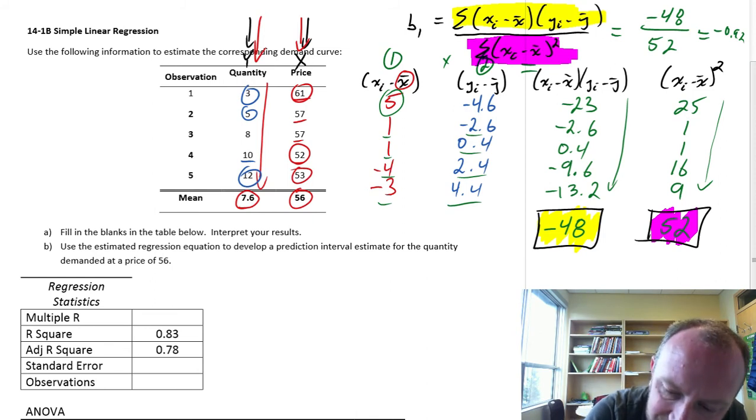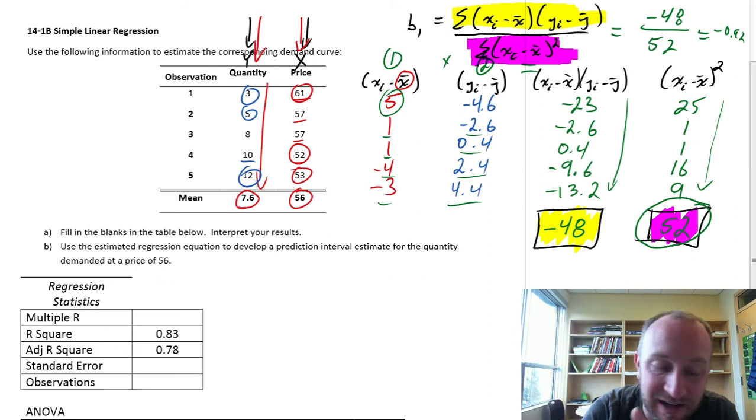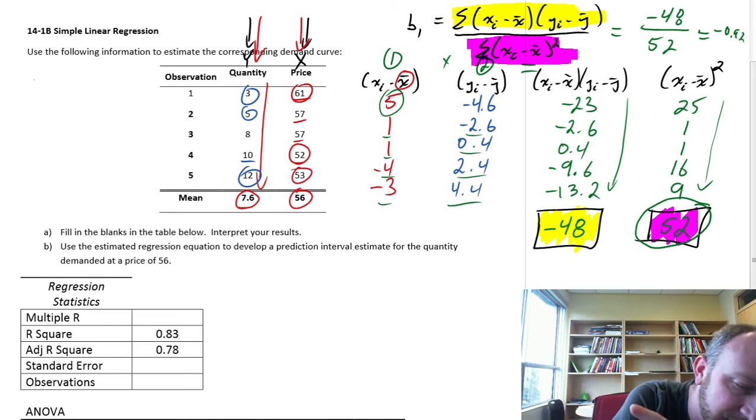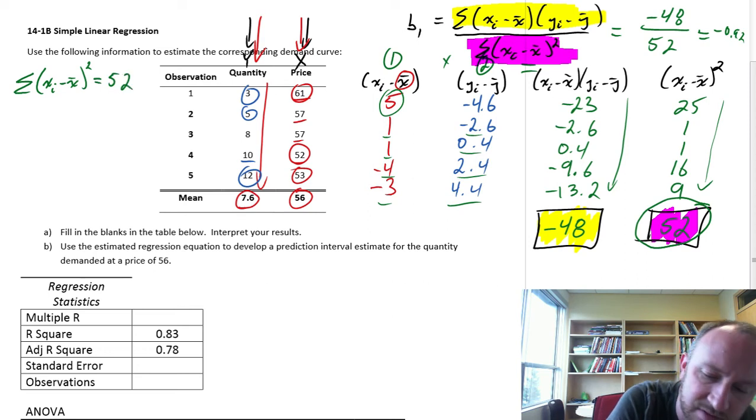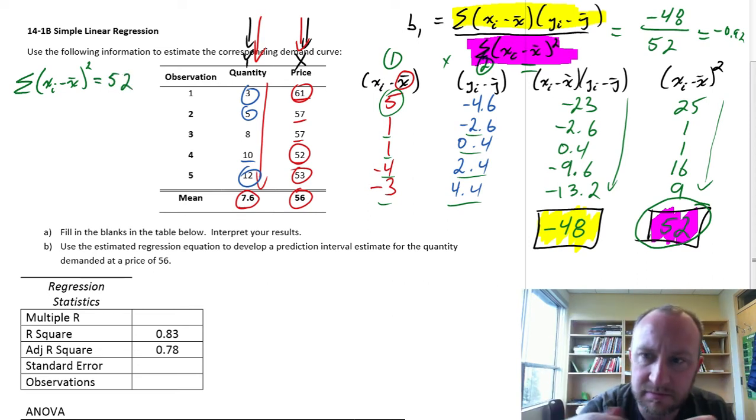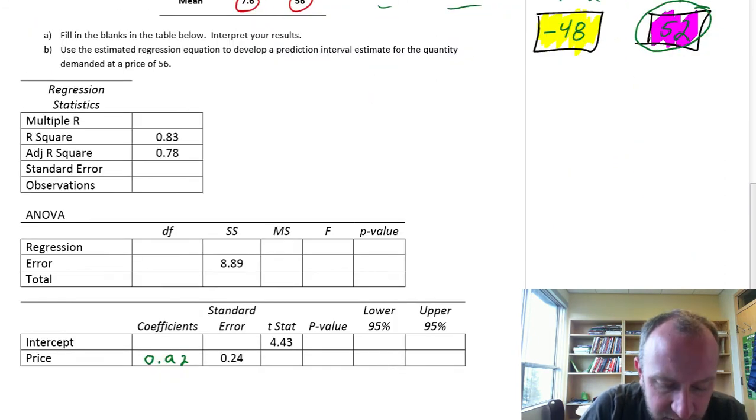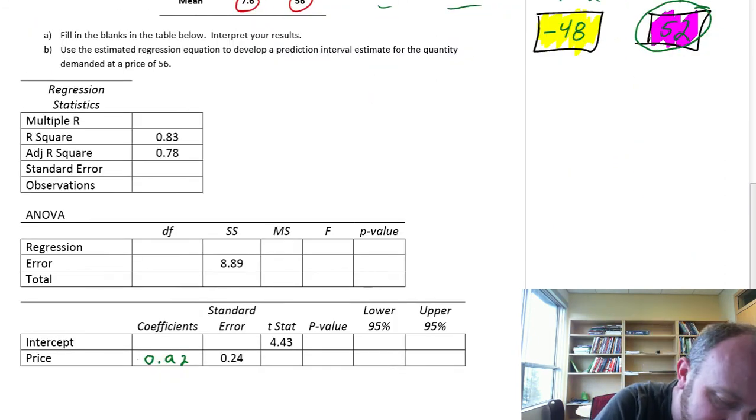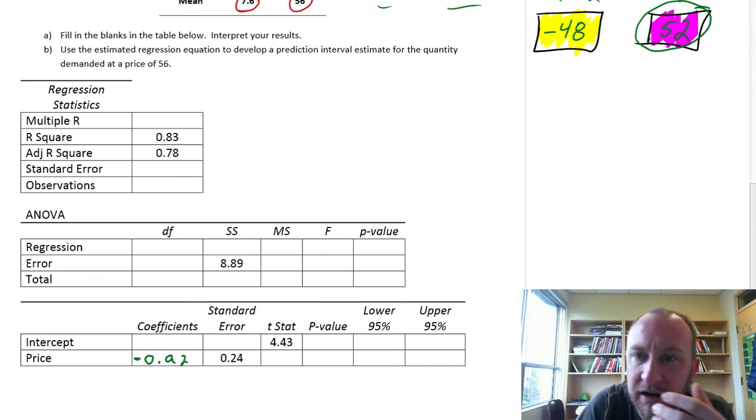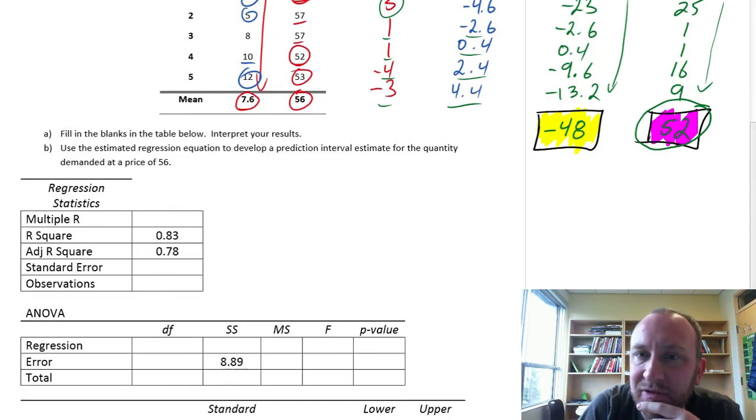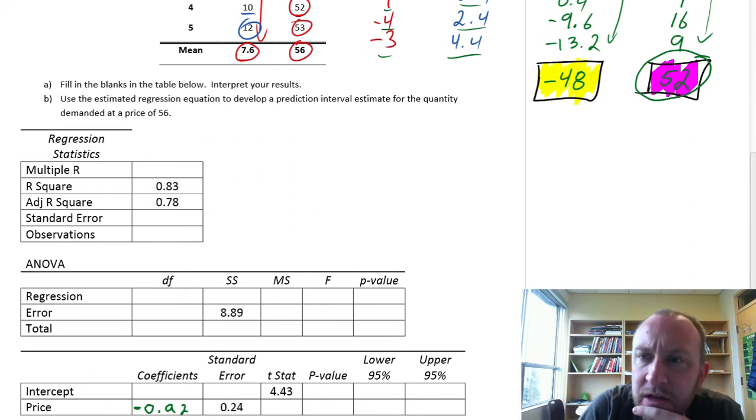I'm going to make a note of this number here. We're going to need that for part B. I'll scribble this down in the margins: 52. I don't want to lose it. We have our slope coefficient, minus 0.92. That's an important part. Always a negative relationship between price and quantity, right?